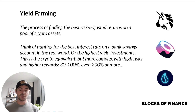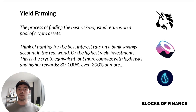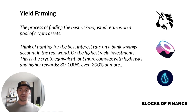With yield farming strategies, you can often earn 30, 50, 100% or more on your money each year. That can go as high as 200% or even more if you want to get into higher risk or more complex farming strategies. So we're going to have a look at some examples of how that works right now.